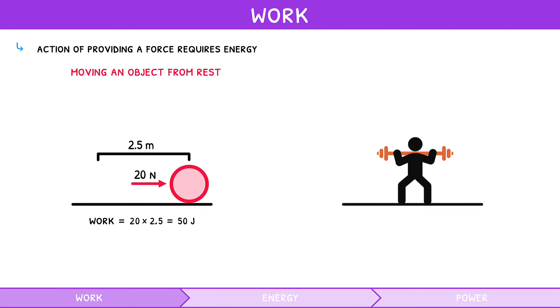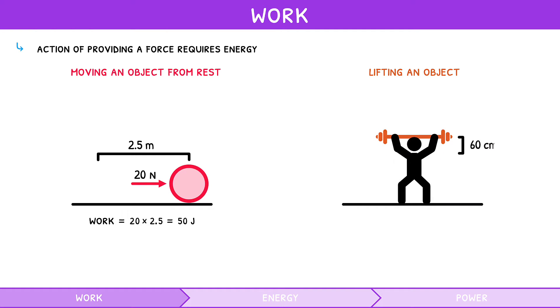Work done lifting an object: a weightlifter shoulder-presses a mass 60 centimeters above his head with 150 Newtons of force. Thus, the work done is force times distance, which is 90 joules.